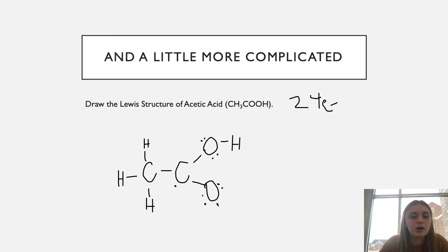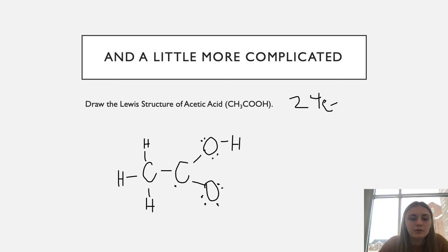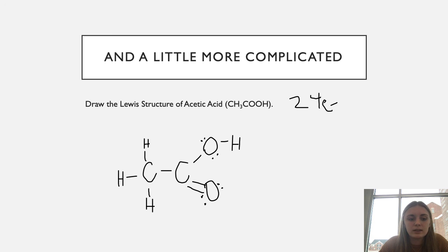We're not done yet because both that carbon and one oxygen don't have a complete octet, but each has an unpaired valence electron. We combine those two electrons to create a double bond between carbon and oxygen, removing the individual unpaired electrons. That gives us our completed Lewis structure for acetic acid.